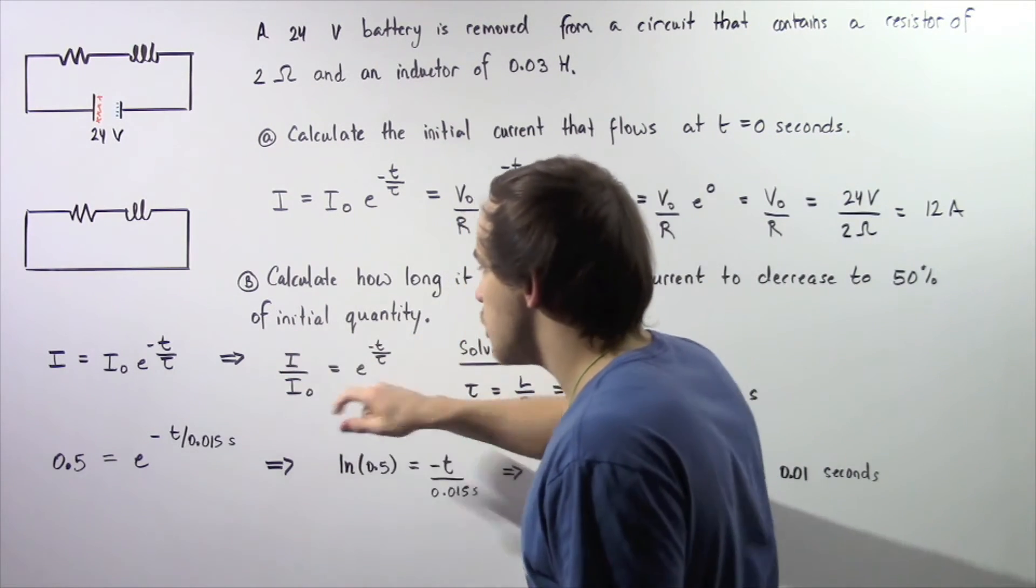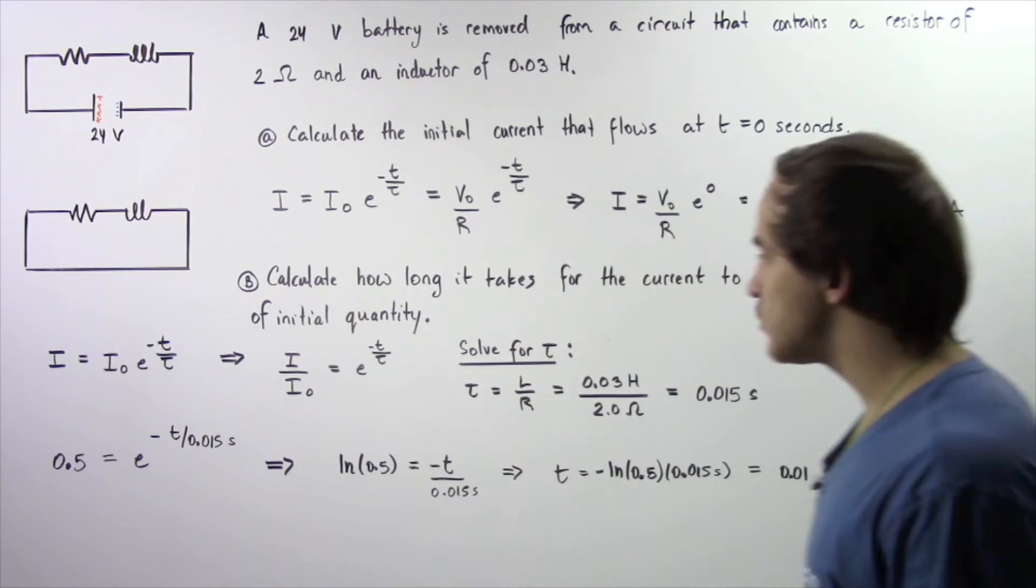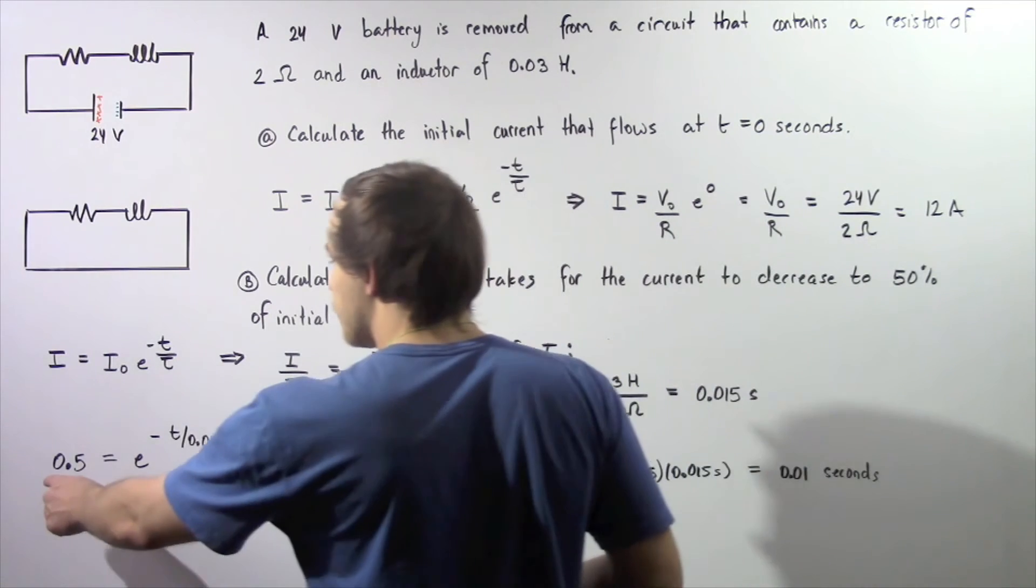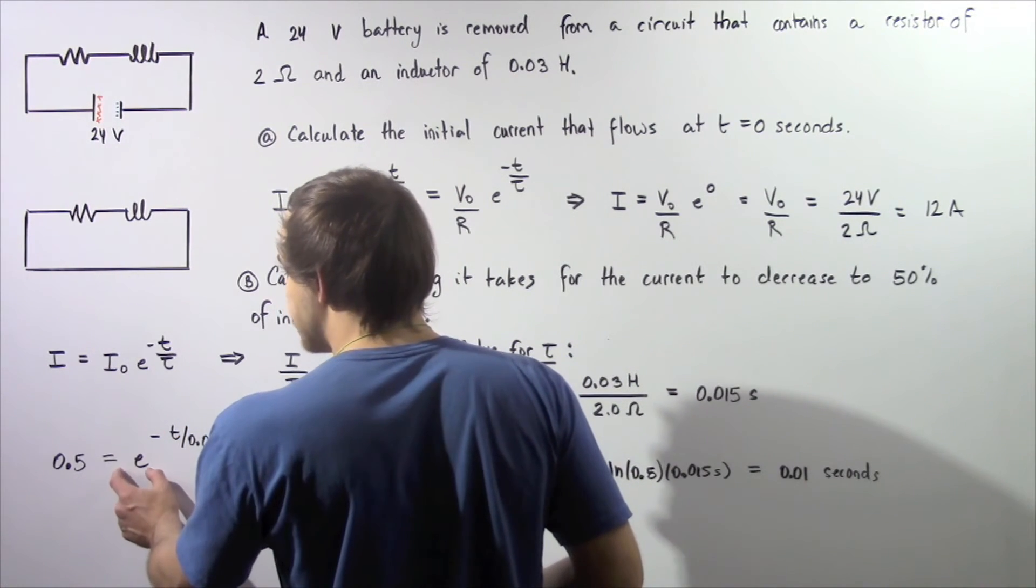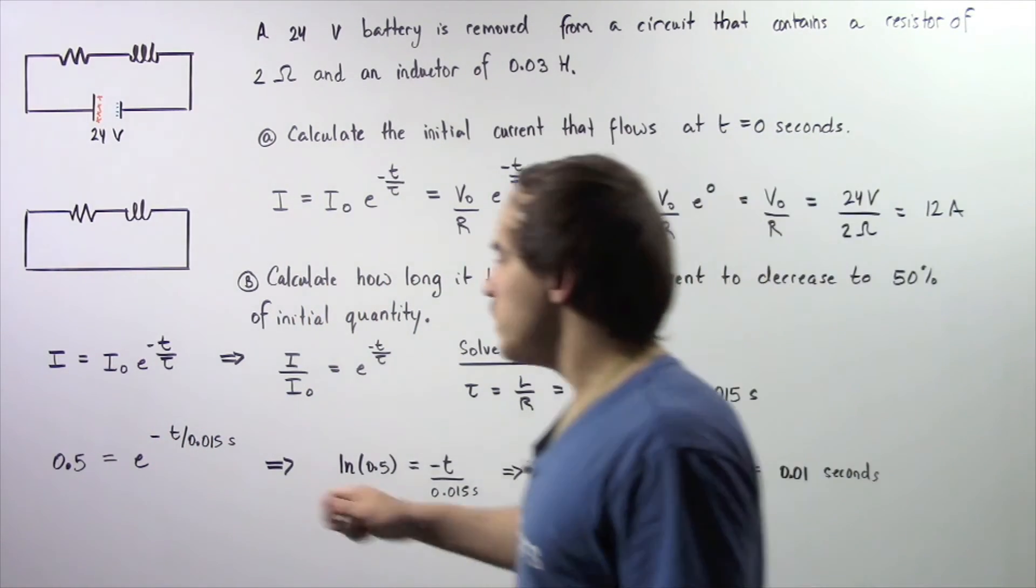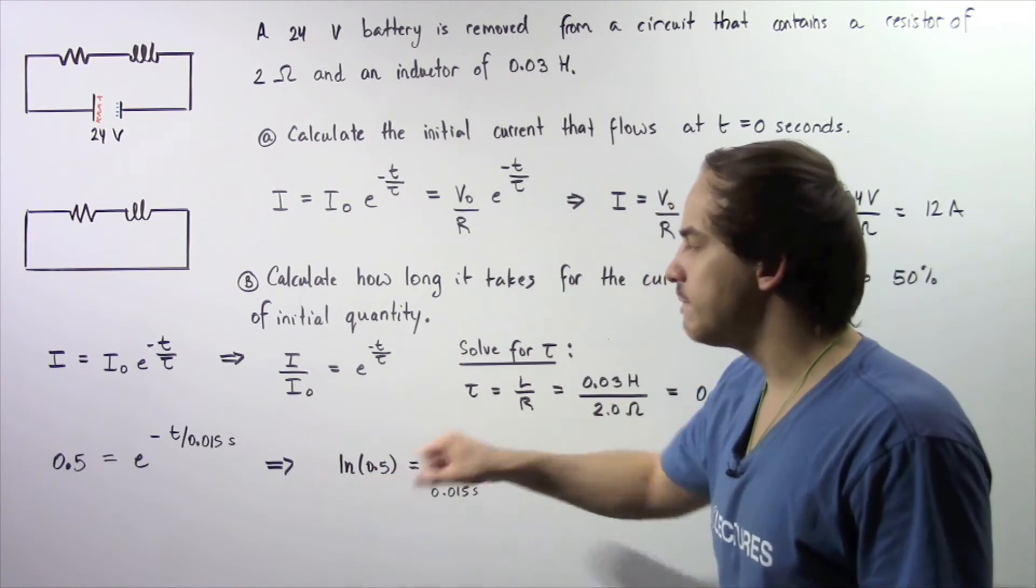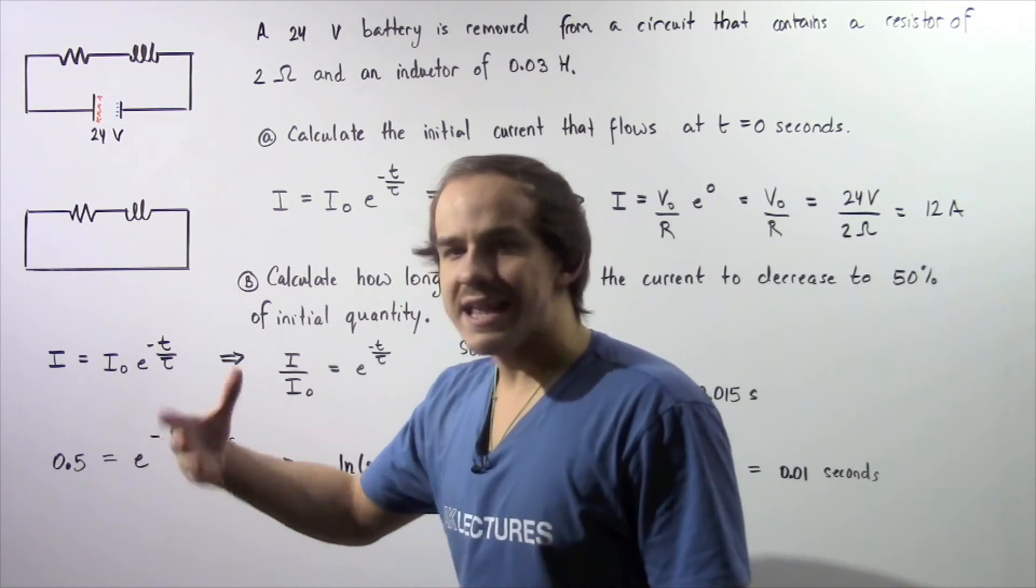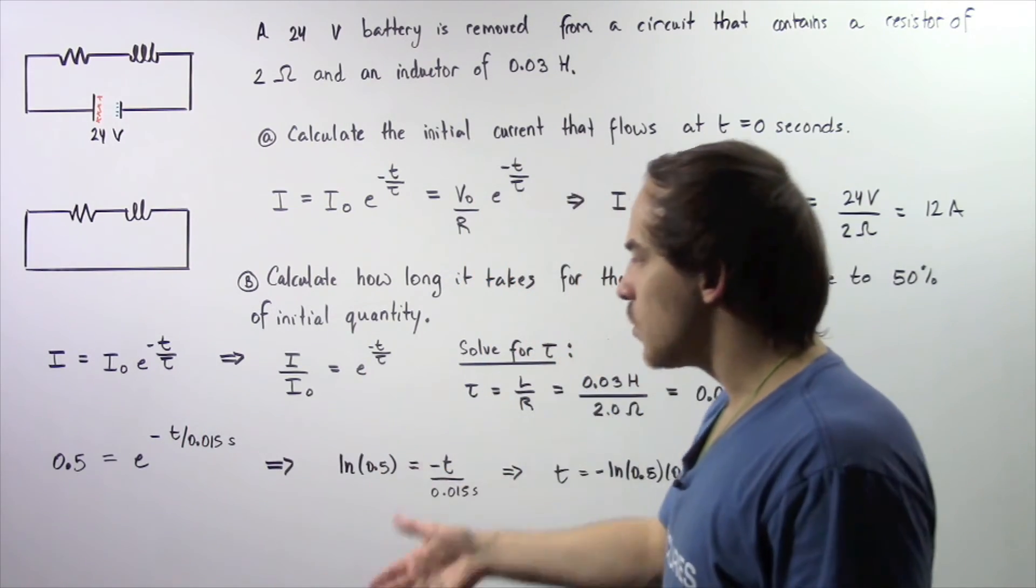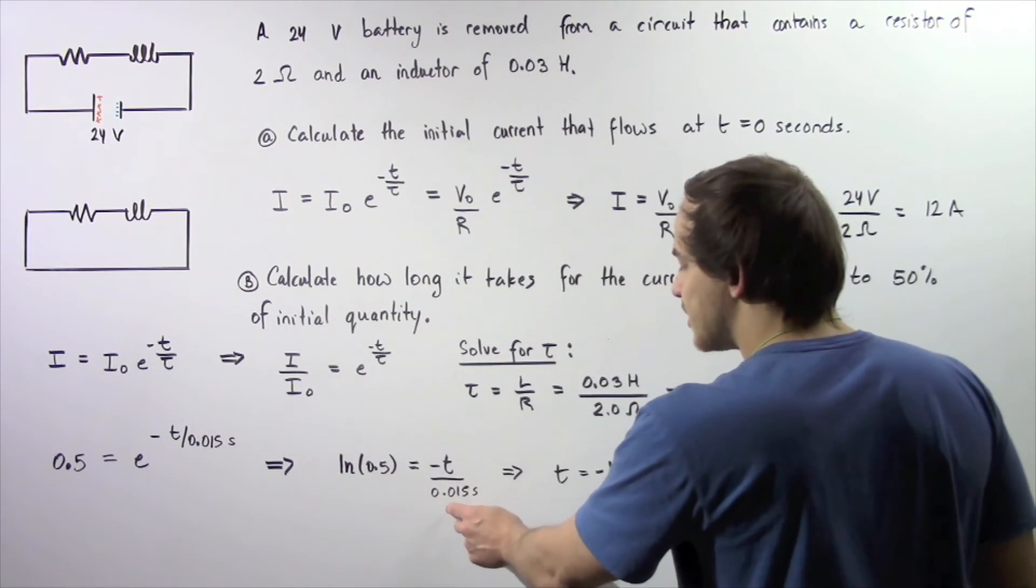Now we know what our time constant is, and we also know what this ratio is. We want our electric current to decrease to 50% of its initial amount. 50% of this quantity is 6. So 6 divided by 12 is simply 0.5. So 0.5 is equal to E raised to the power of negative t divided by 0.015 seconds. We can take the natural log of both sides. This quantity becomes natural log of 0.5. When we take the natural log of an exponent, that exponent cancels out and we are left with negative time divided by 0.015 seconds.